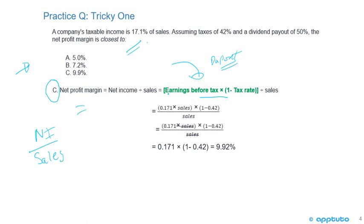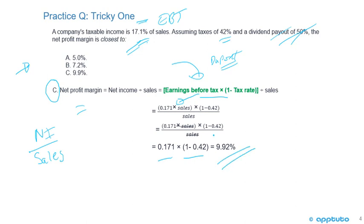It's nice to know that net income equals earnings before tax times (1 minus the tax rate). They've given us taxable income — that's earnings before tax — as 17.1% of sales. So I can substitute 0.171 times sales for earnings before tax, then multiply by (1 minus the tax rate). Note that the dividend payout is just red herring information meant to confuse you. The numerator becomes 0.171 times sales times (1 minus 0.42), divided by sales. Sales cancels, leaving 0.171 times (1 minus 0.42), giving the correct answer of C: 9.92%, closest to 9.9%.